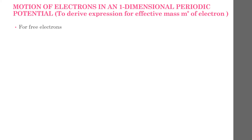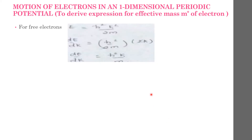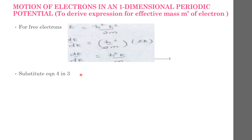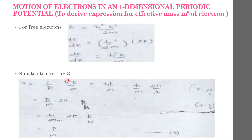Now we will verify this for free electrons. E = ℏ²k²/2m, equation 4. Differentiating this equation, we get dE/dk = ℏ²/2m × 2k. The 2 cancels out, giving dE/dk = ℏ²k/m, equation 4. Substituting equation 4 in equation 3, we get v = (1/ℏ) × (ℏ²k/m).